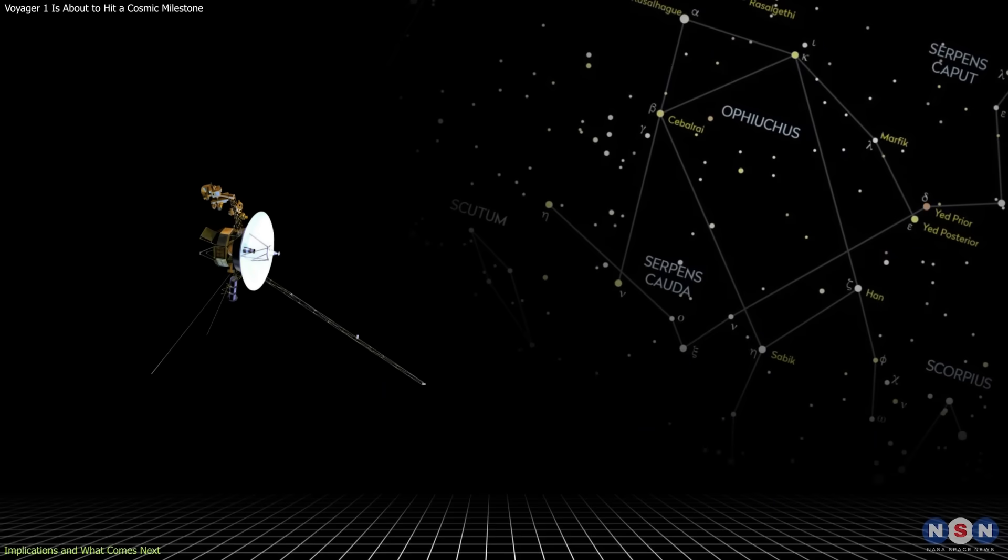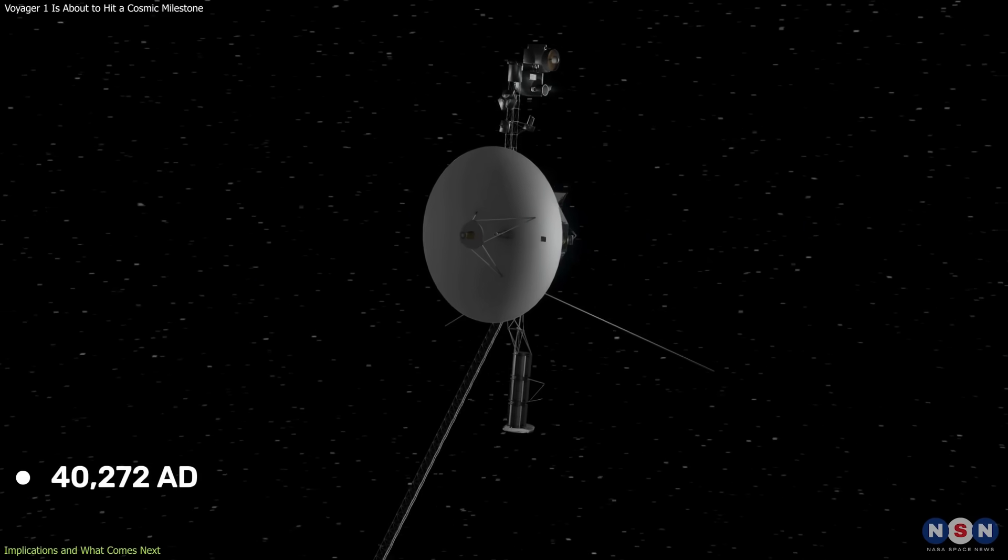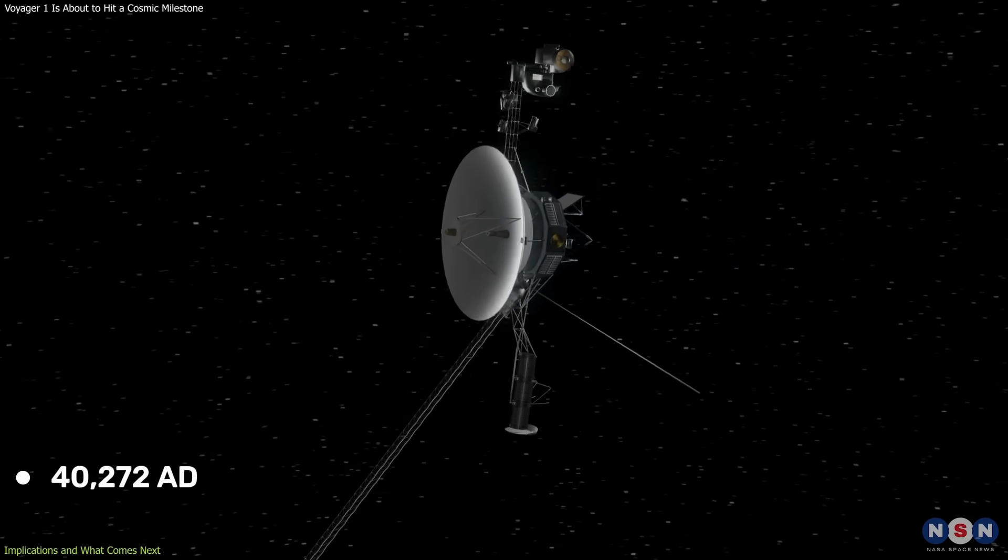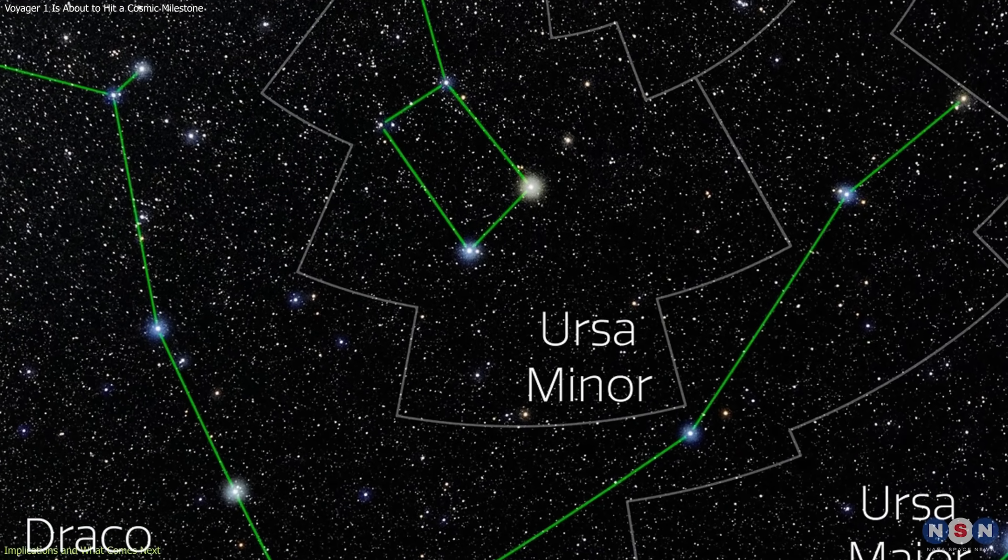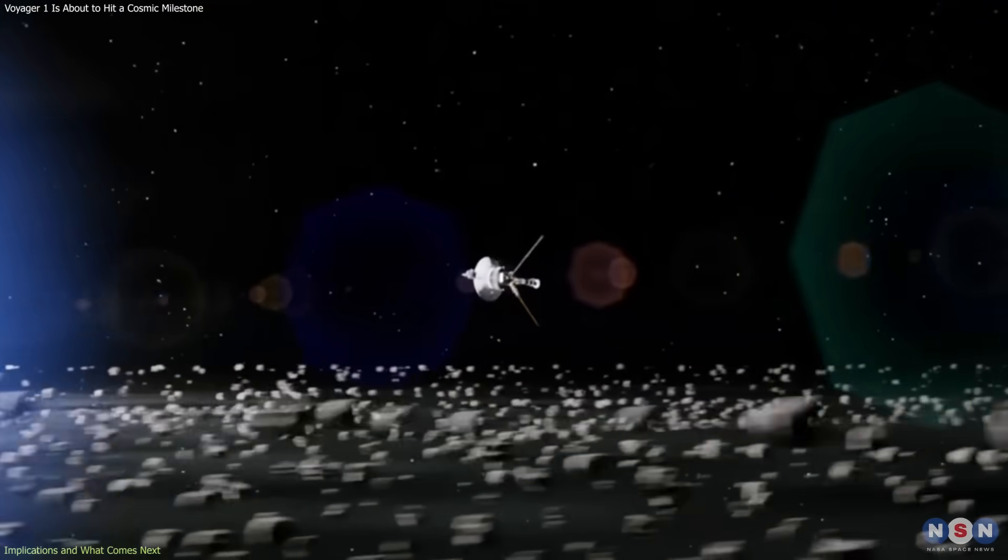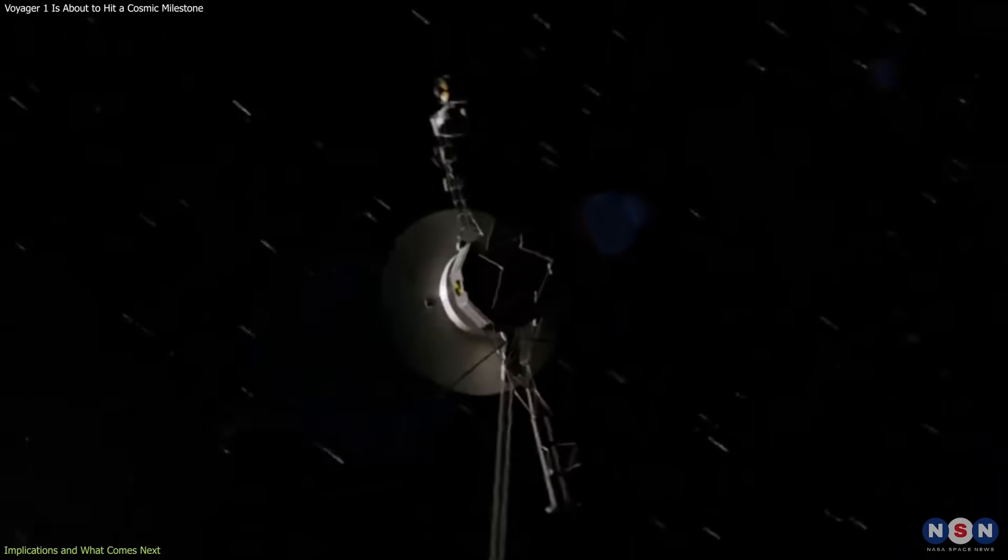Its path currently points toward the constellation Ophiuchus, and around the year 40,272 AD, it will pass within 1.7 light-years of a star in Ursa Minor. By then, it will have long ceased to function, but its endurance will remain a marker of human exploration.